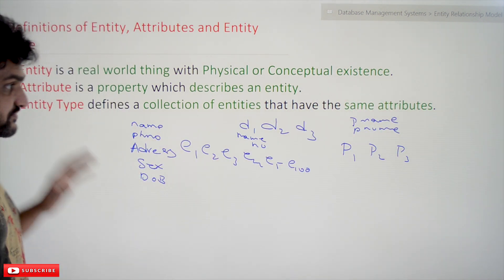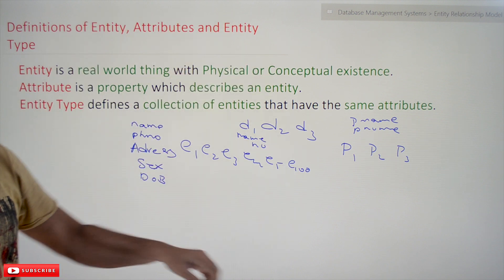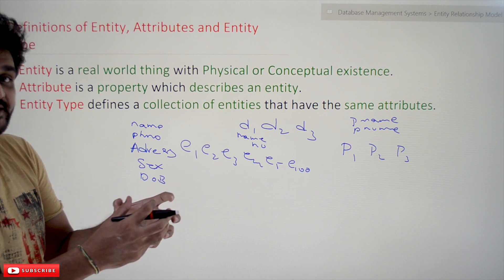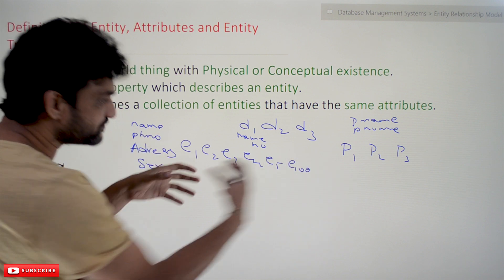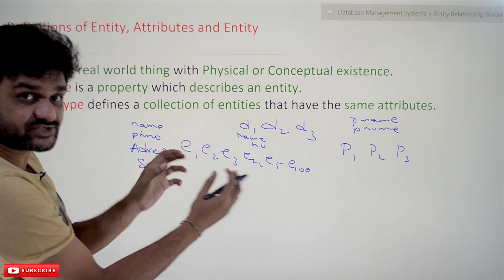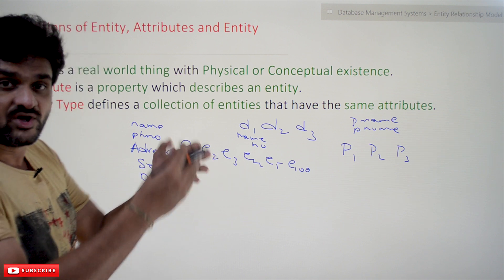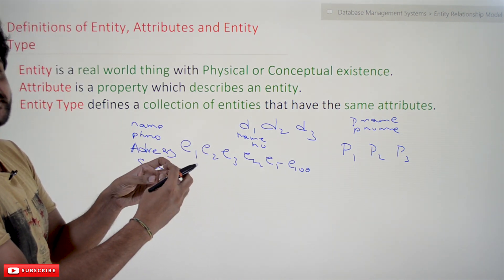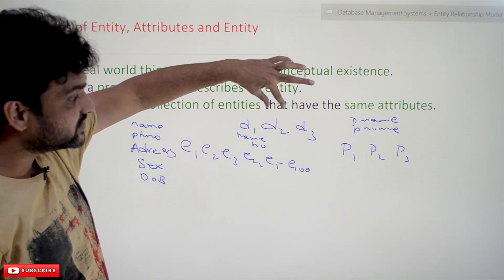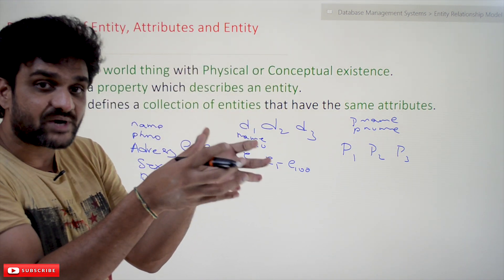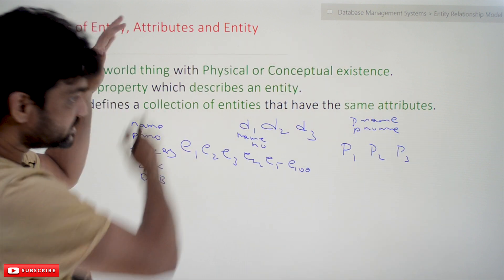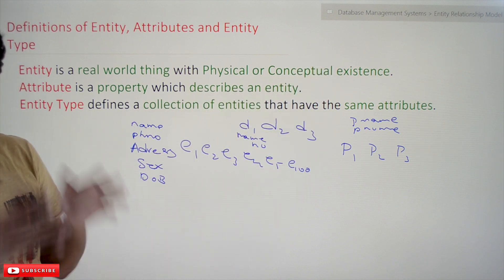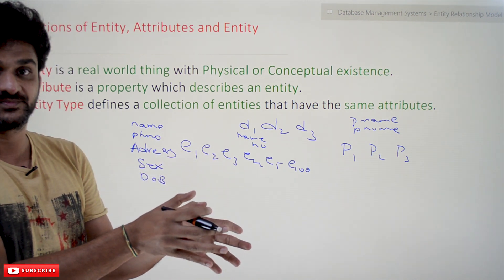Next, entity type defines a collection of entities that have the same attributes. Among all entities in the company, if you collect all entities with the same properties — for example, employee 1, employee 4, employee 90, employee 100, employee 1000 — all those employees will have the same properties. Similarly, collecting all departments gives entities with the same properties. So a collection of entities that have the same attributes is what we call an entity type.